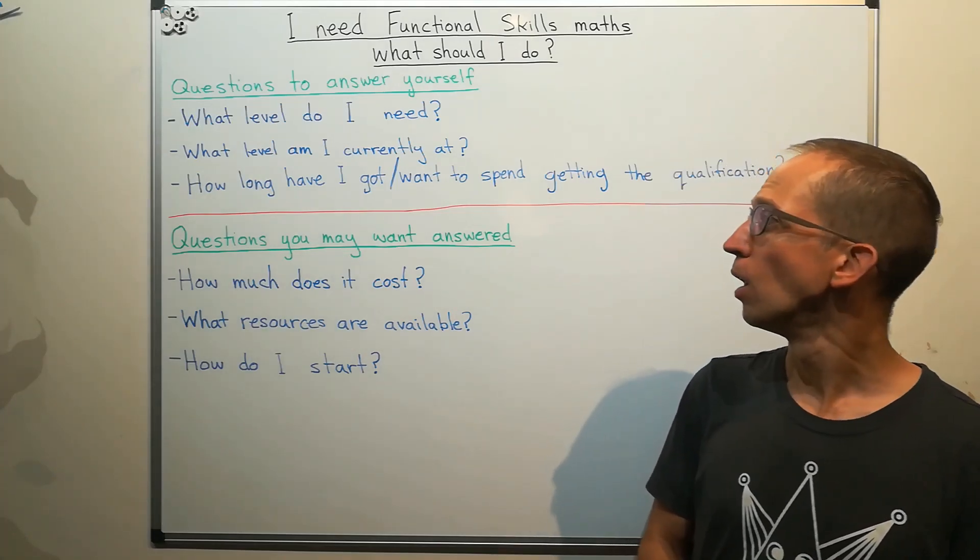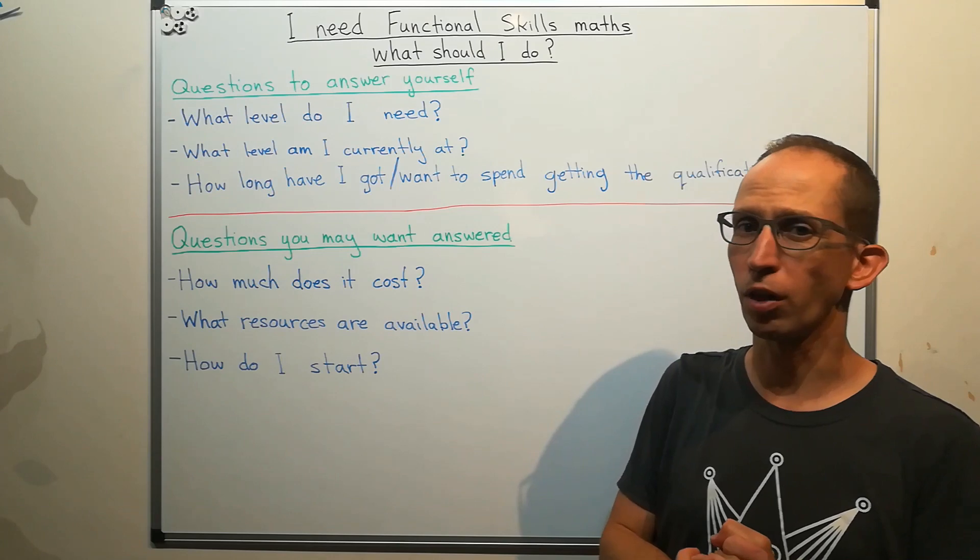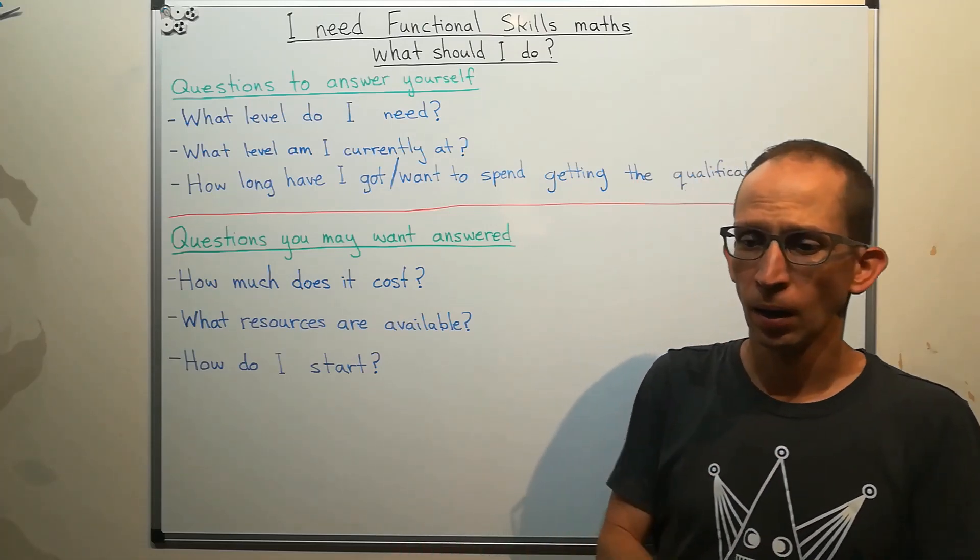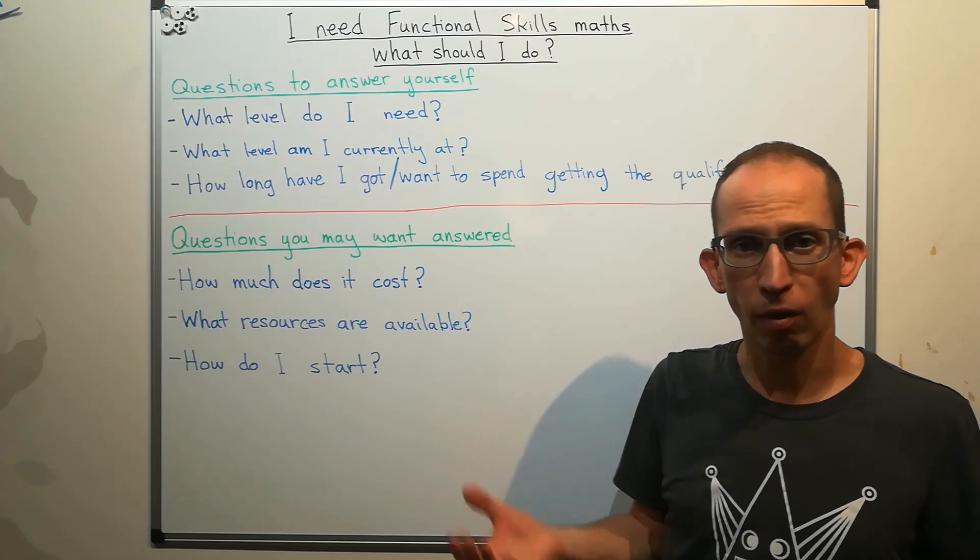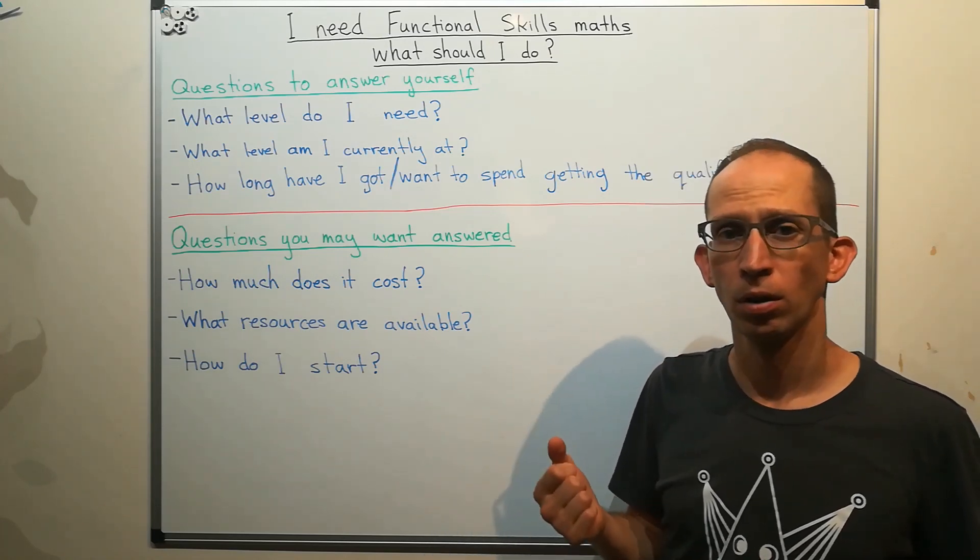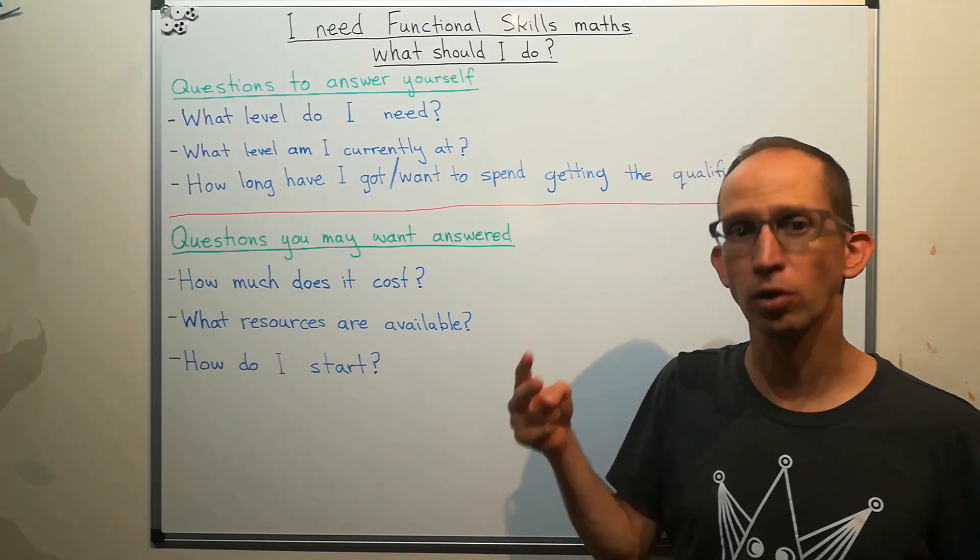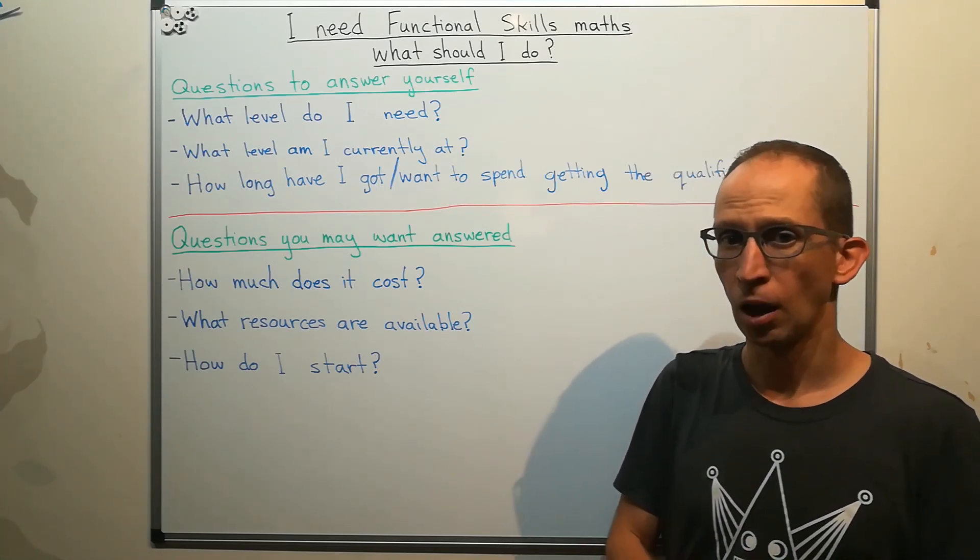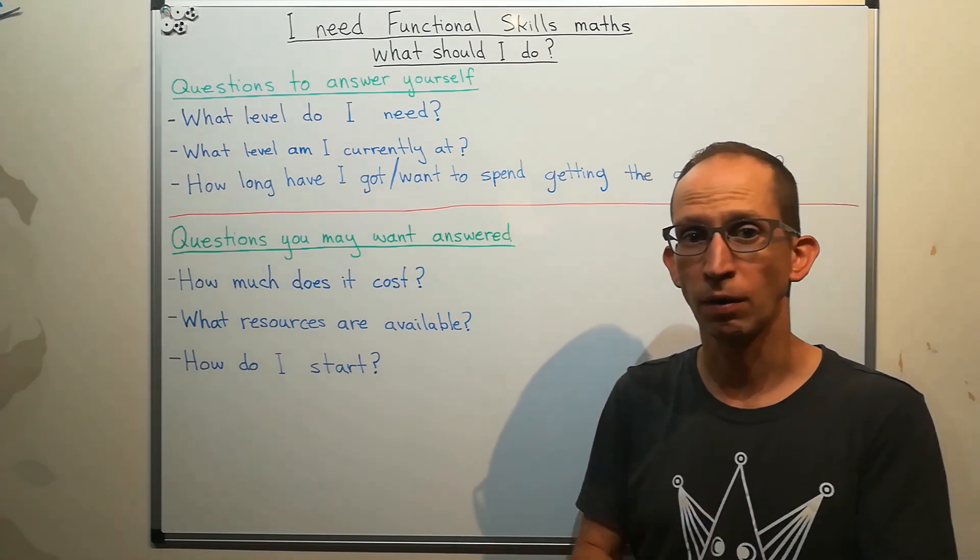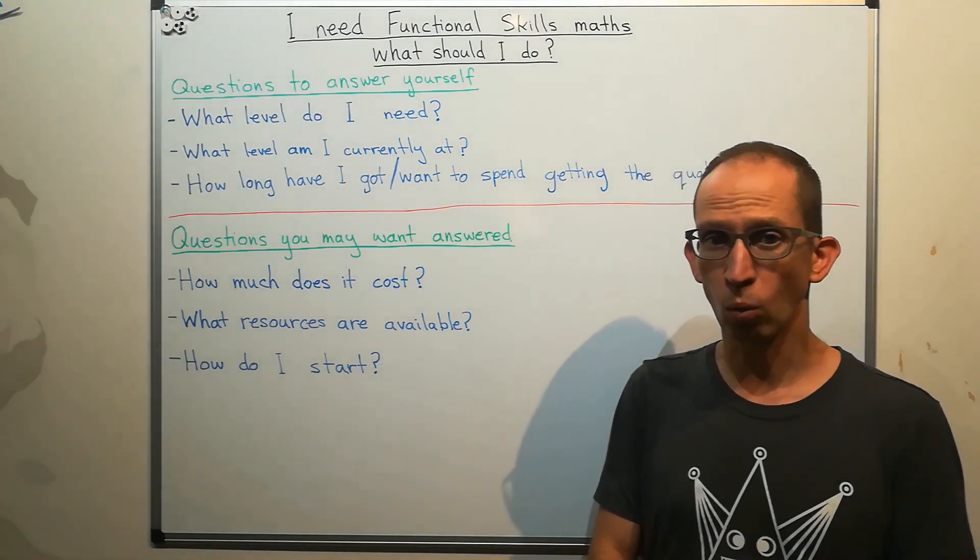So if you haven't done maths for a while, then you might not actually know what level you're at at the moment. So you might think, I need to do functional skills maths. Maybe you know you need to do level two, but you think, well, what's my starting point? Am I starting from entry level three? Am I starting from level one? You might not even know the different levels that there are for functional skills maths. So very briefly, there are three entry level qualifications. Entry level one, entry level two, entry level three. And then you've got level one and level two, which are above the entry level qualifications. And it's difficult to know where you would be starting, but obviously that's going to make a difference. It's going to make a difference as to what courses you might do, what resources you're going to need, all of those sorts of things.